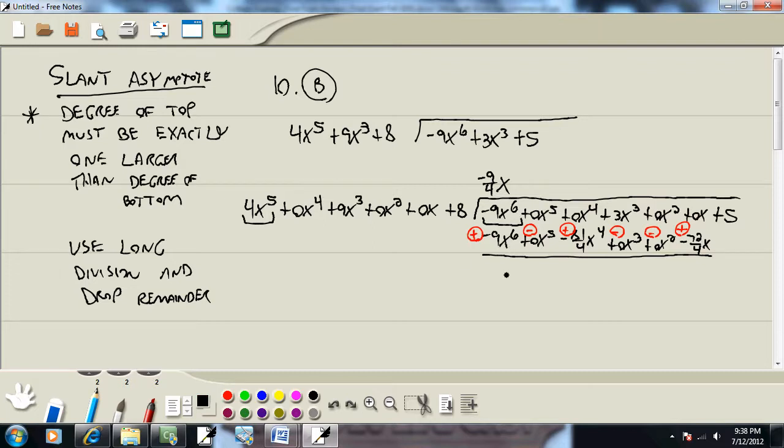Negative 9x to the sixth plus 9x to the sixth drops away. 0 minus 0 is gone. 0 plus 81 fourths x to the fourth. Then 3x to the third minus 0, so that gives us 3x to the third. 0 minus 0 is 0x squared. 0 plus 72 fourths, and that reduces to 18x. And then I'll carry down the plus 5. Now, my degree here is 5, my degree here is 4. When your degree down here is lower than what you're dividing by, this is your remainder. And our instructions say drop the remainder.